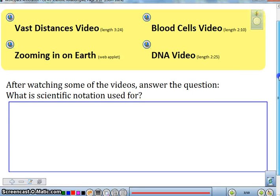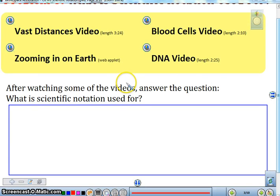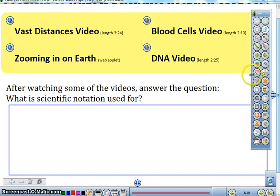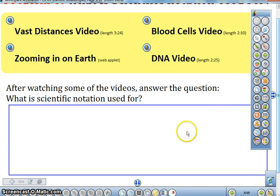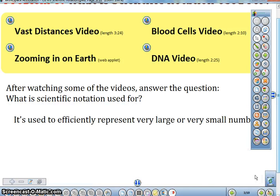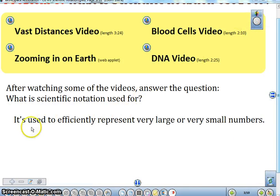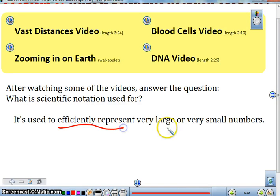So after watching the two videos, what we kind of want you to be thinking about, and we may take a look at the other ones in class, is why or what is scientific notation used for? So thinking about that, I want you to pause this and write down what you think the reason for scientific notation is. We're going to take a look at what I think it is, and you can pause the video again and write this down if you need to. And the key thing that we want you to be thinking about this year in Math 8 is that scientific notation is going to be used to efficiently represent very, very large or very, very small numbers. So that's the reason we use it. So it's going to be very helpful in your science classes as you continue on.